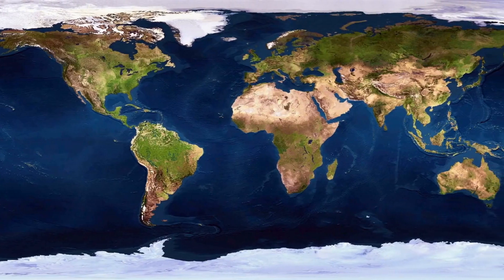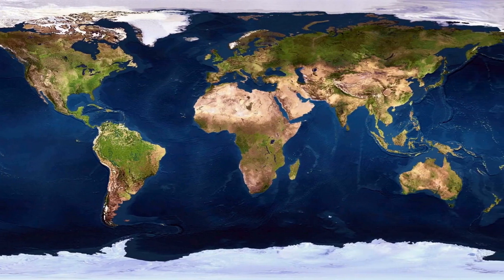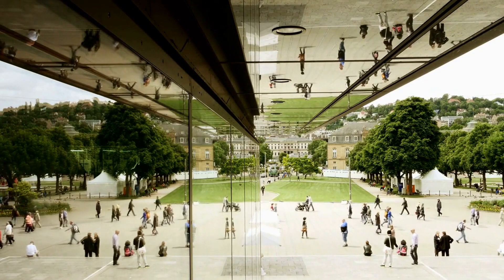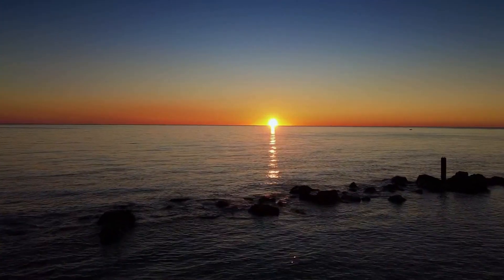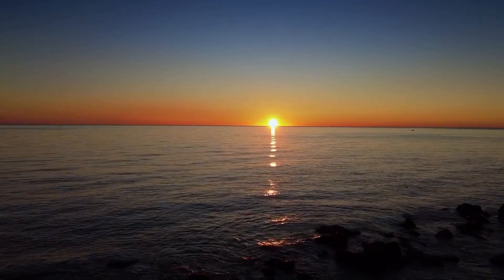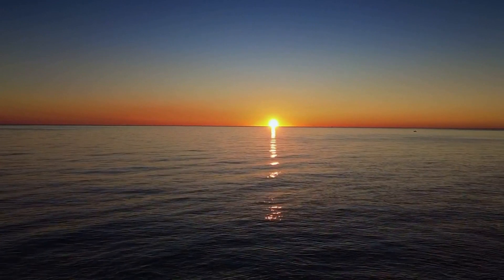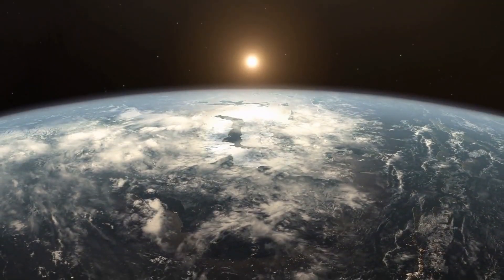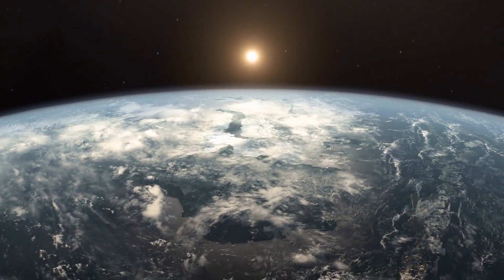The horizon appears flat, so the Earth must be flat. This argument is based on a misunderstanding of perspective. While the horizon may appear flat, this is only because we are standing on a relatively small part of a large, curved surface. If you climb to a high altitude, you can see the curvature of the Earth.